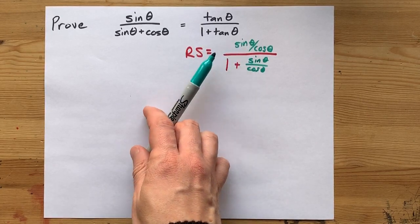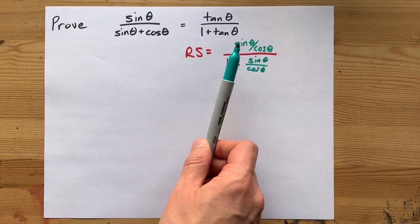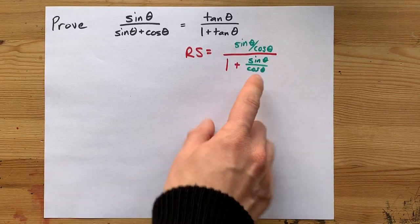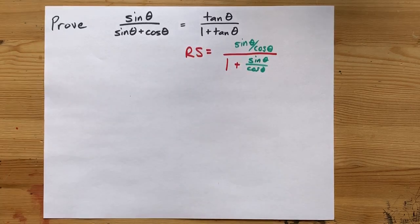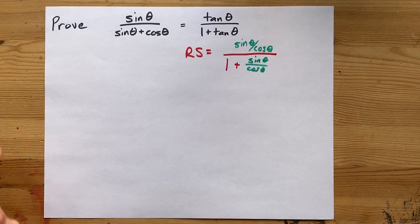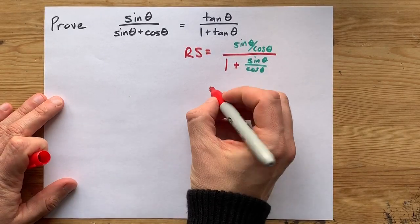Now, we have something divided by something else, but I can't do the whole division by a fraction as multiplication by its reciprocal unless I have a single fraction in the denominator. So how do I get one fraction in the denominator? I'm going to need a common denominator.